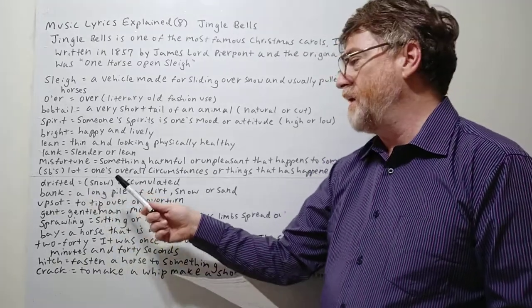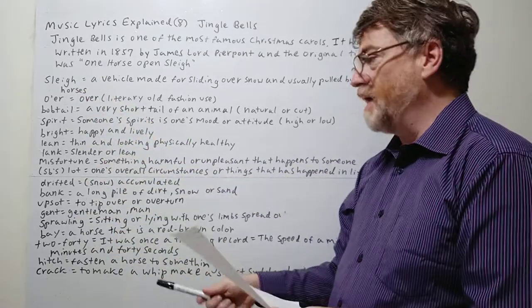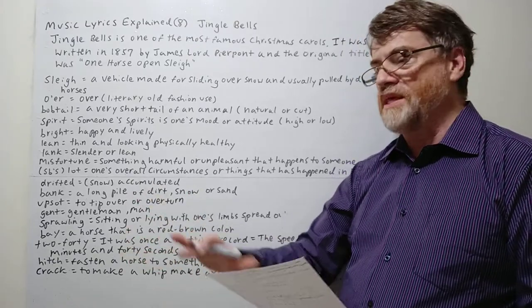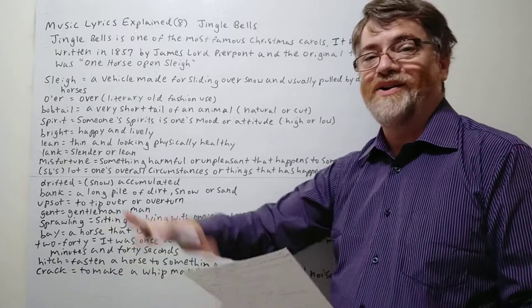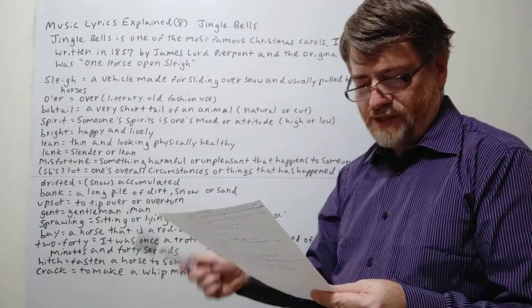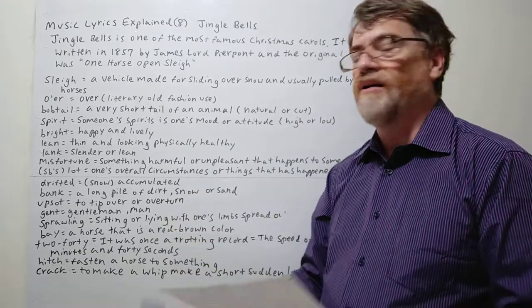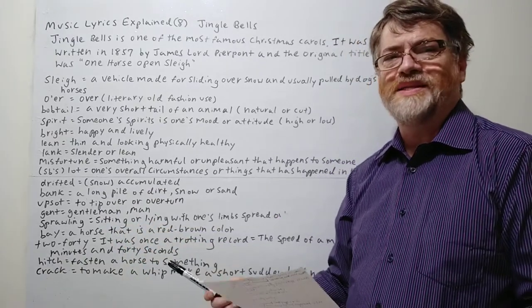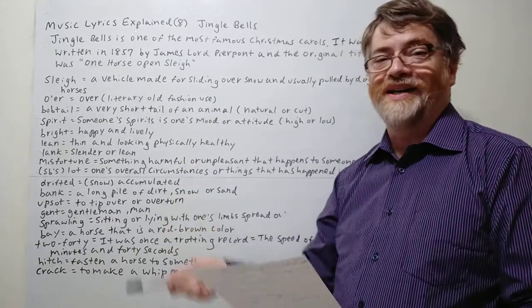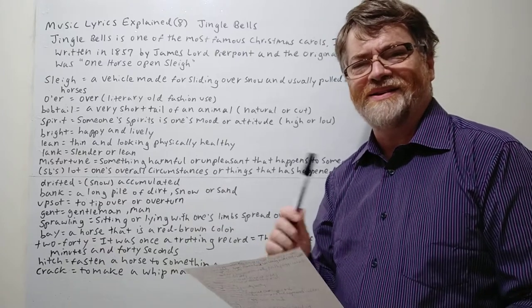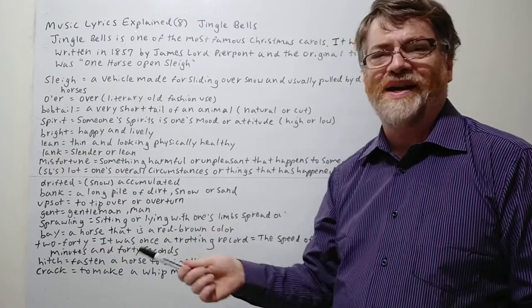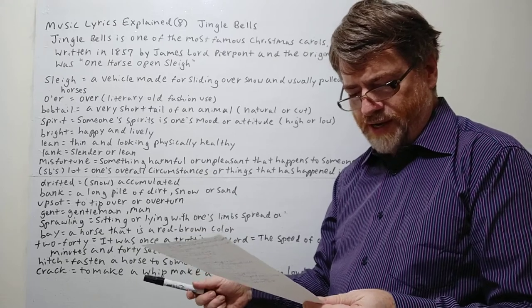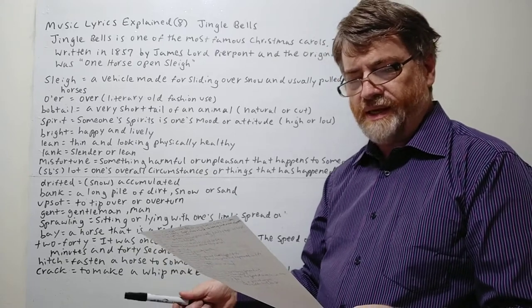Drifted is referring to the snow. Drifted means it's accumulated, so it got really high. A drifted bank—a long pile of snow or dirt or sand. Maybe it was along the side of the road. Maybe they didn't recognize the side of the road, or the horse fell off the side of the road. Upsot, also very old usage words, means to tip over or overturn. I'm not sure most people realize this is what's happening in the song—the horse is overturning, they're all falling down. Bad luck for this horse. The song sounds so cheerful, but this doesn't quite fit in it.